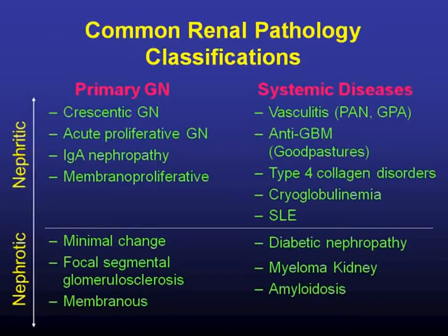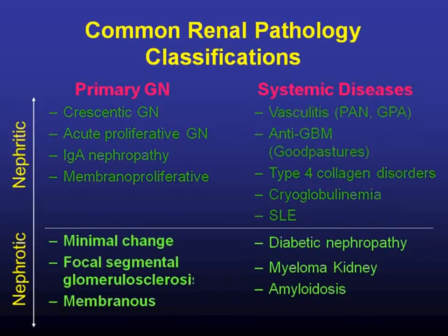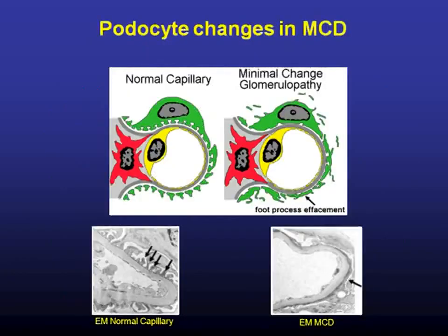Here are the common renal pathology classifications covering nephritic and nephrotic syndromes. We went over most of the nephritic syndromes last week, so the focus this week is going to be on nephrotic syndromes. I'm going to focus on primary nephrotic syndromes: minimal change disease, focal segmental glomerulosclerosis, and membranous nephropathy. Diabetic nephropathy, myeloma kidney, and amyloidosis are systemic diseases that can also lead to nephrotic syndrome. Minimal change disease is defined by podocyte effacement.